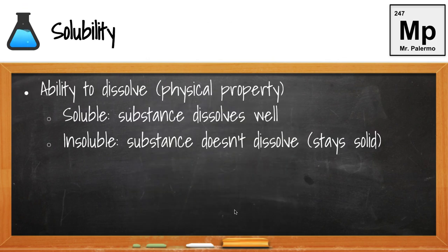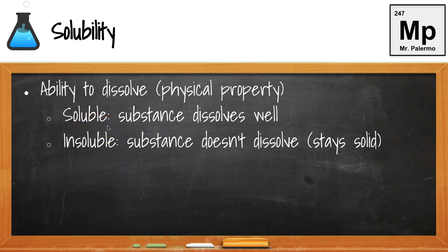Now that we understand what a solution is, let's talk about solubility. This is the ability to dissolve, and it's a physical property. If a substance is soluble, we say that it dissolves well. If it's insoluble — not soluble — then the substance doesn't dissolve well and it will stay as a solid.